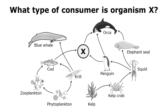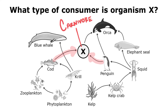Here is one final practice question where I have an organism X and I'm wondering what type of consumer it is. All I need to do is look and see what organism X is eating. I can see that organism X is eating cod and penguins. So because organism X is eating only other animals, organism X must be a carnivore.